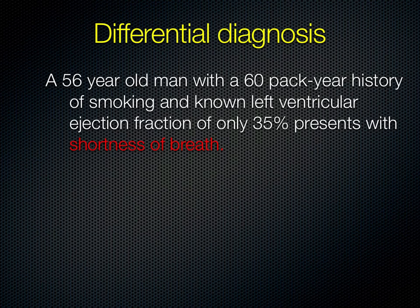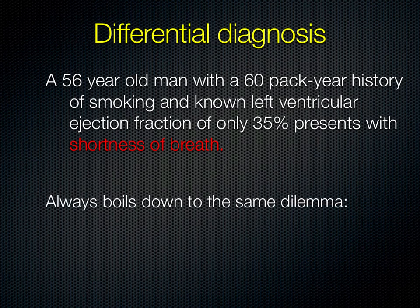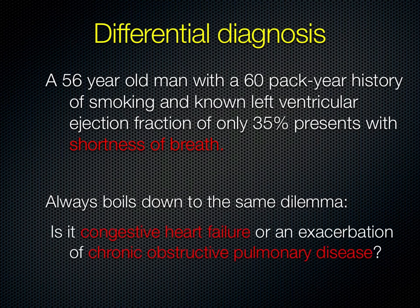When it comes to differential diagnosis, it's often very difficult to figure out what's going on with a patient who's short of breath. For instance, you have a 56-year-old man with a 60-pack year history of smoking and known poor cardiac function, represented by a left ventricular ejection fraction of 35%. This patient presents to the emergency department or to your office with shortness of breath. In this case, how do you know what's going on?